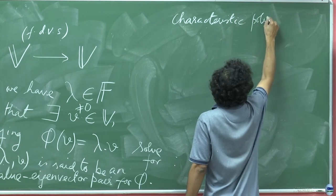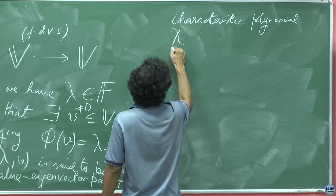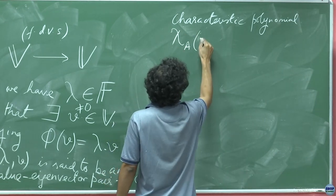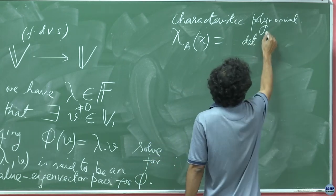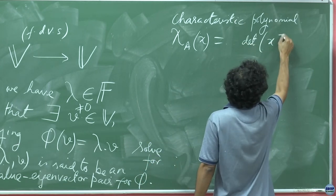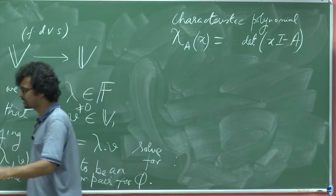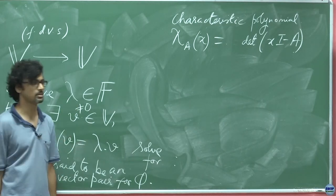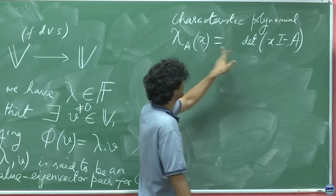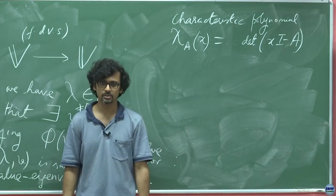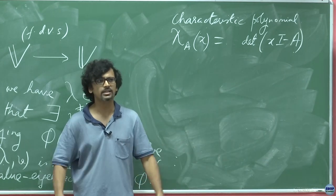That monic polynomial has a name: it is called the characteristic polynomial, chi of matrix A of x, equal to the determinant of (xI minus A). When equated to zero — whether you take A minus xI or xI minus A, it doesn't matter, it is just a sign — the solutions of the characteristic polynomial are exactly the eigenvalues, whenever such solutions exist over the field in question.